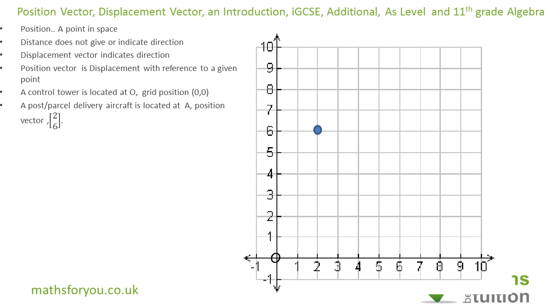And then we have an aircraft located at A with position vector 2, 6. So home is, sorry, the control tower is here. And 2, 6 to be 2 and then 6 there. So that is now our position vector because it's referenced from the origin.